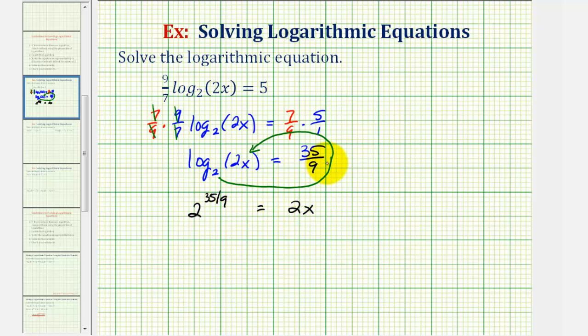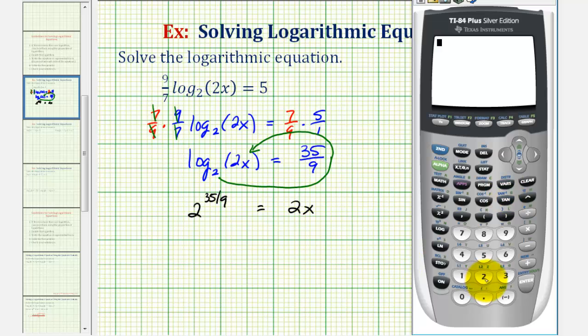And now we'll use the calculator to approximate two raised to this fractional power. So we have two, here's the exponent key. We do need the fractional exponent in parentheses. So open parenthesis, 35 divided by nine, close parenthesis, enter. So if we round to four decimal places, this would be approximately 14.8140.